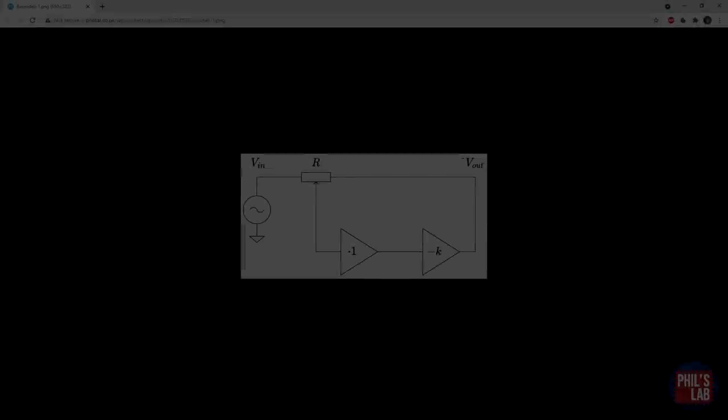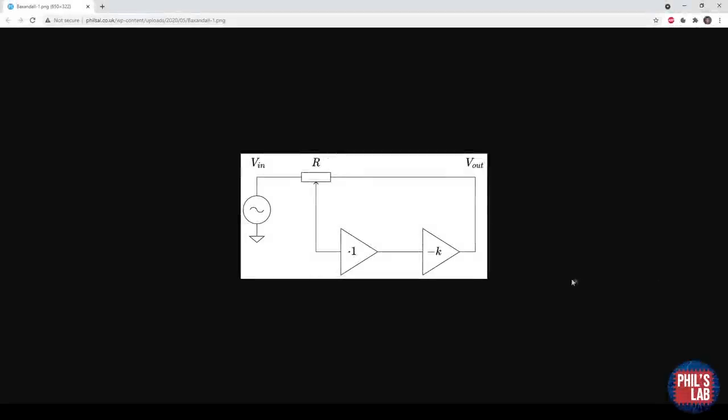As the potentiometer would act to decrease the signal level, clearly we require a better solution, and this is where the active Baxandall volume stage comes in, which was actually named after the late Pete Baxandall who invented this. A simplified block diagram form of the volume control is shown here.